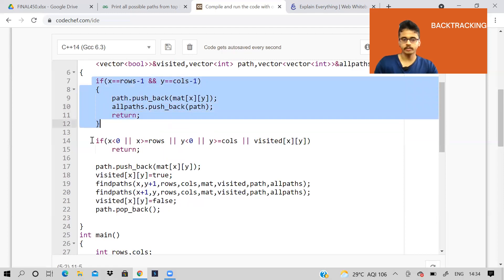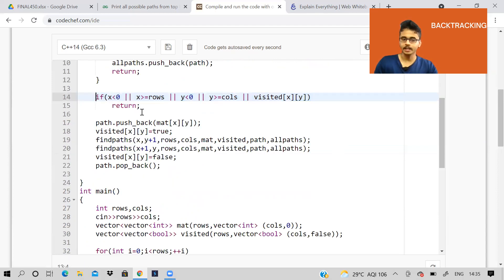If this is not true, then we have to check if the cell is valid or not. So here we are checking for cell validity. If any of these conditions are true, we will just return. We won't do anything. But if the cell is valid, we will push it in our path vector. We will also mark it as visited. Then we will check for right side - we will go to the right side of the cell. Also, we will go to the downside of our cell. After both of these operations are done, we will finally unmark it in the visited array and we'll remove it from our current path. This is the backtracking part.